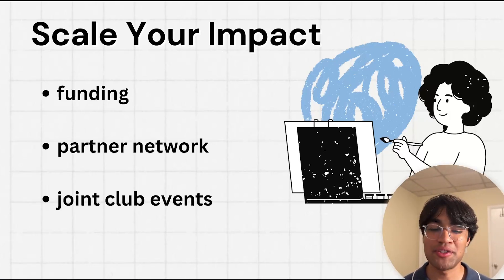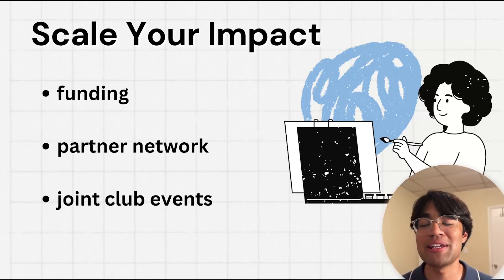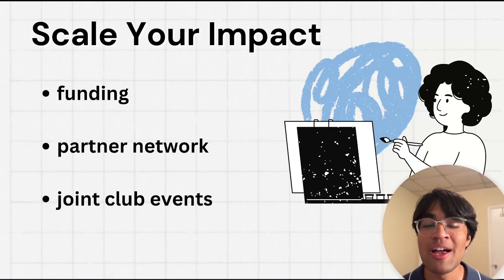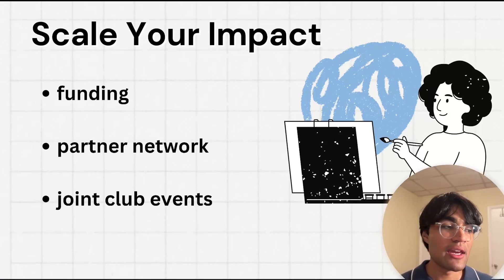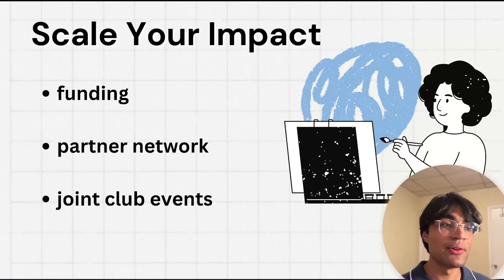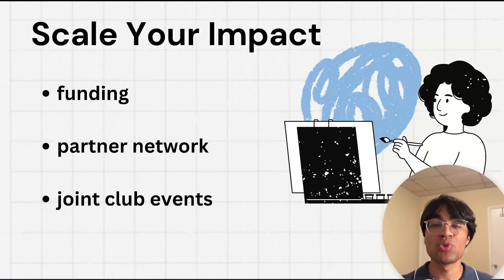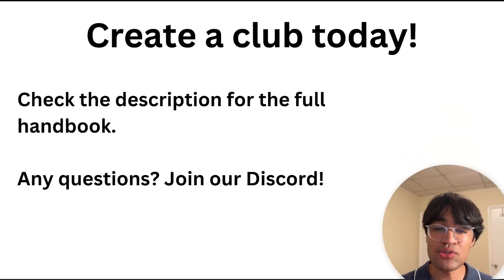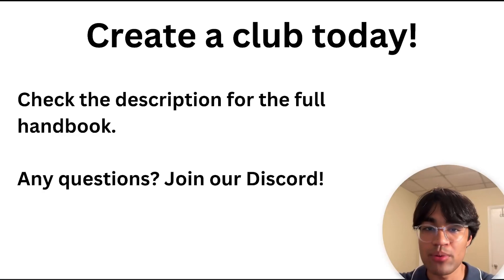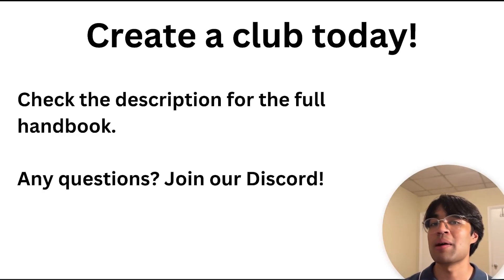The final thing is joint club events. Once we have 100 or 200 research clubs created around the world, each with around 10 members, we'll have thousands of people that can participate in events together — things like phone-a-thons to fundraise for advancing STEM education, funding research initiatives at certain schools, or supporting science fairs that went defunct. We can form large-scale joint club events and scale all of our impacts based on the number of research clubs that form. The takeaway is to create a club today — check the description for the full handbook, and if you have any questions, join our Discord, link in the description.